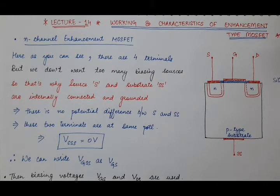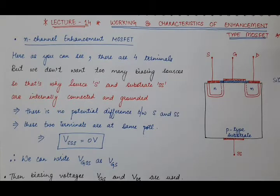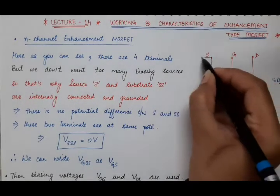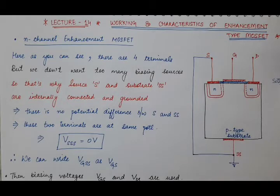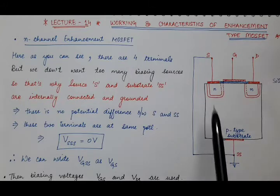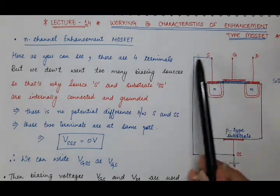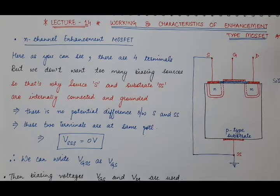Above that thin layer of silicon dioxide, a metallic contact is developed for the gate terminal. Now here we have a total of four terminals, but we don't want too many biasing sources. So the source terminal and the substrate terminal are internally connected, and both are at the same potential — grounded. There is no potential difference between source and substrate; it is 0 volt.